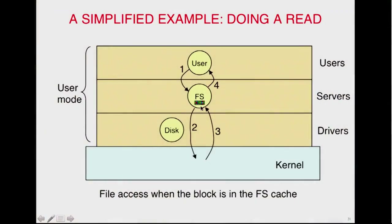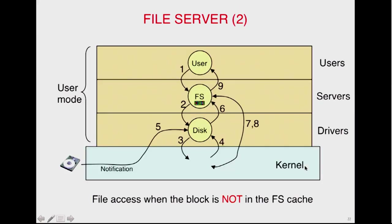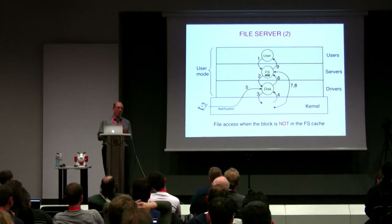Here's how things normally work. The user sends a message to the file system. If the block is in the cache, the file system tells the kernel to copy it to user mode and the user gets the block. If it's not in cache, the file system calls the disk driver to read the block. The disk driver tells the kernel to do the read. Eventually an interrupt comes in from the disk, which is turned into a message. The disk driver gets notified, figures out what happened, tells the file system the DMA completed, and then the block is copied to user mode. There's a bunch of messages back and forth taking fractions of a microsecond — some performance hit here.